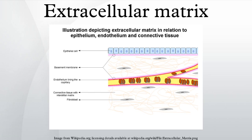Extracellular matrix proteins are commonly used in cell culture systems to maintain stem and precursor cells in an undifferentiated state during cell culture and to induce differentiation of epithelial, endothelial, and smooth muscle cells in vitro. Extracellular matrix proteins can also be used to support 3D cell culture in vitro for modeling tumor development. A class of biomaterials derived from processing human or animal tissues to retain portions of the extracellular matrix are called ECM biomaterials.